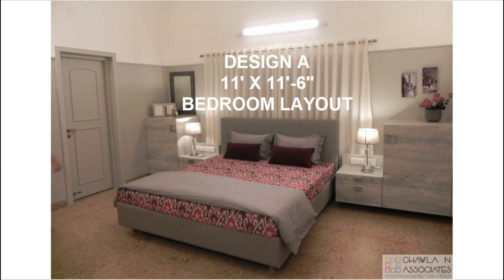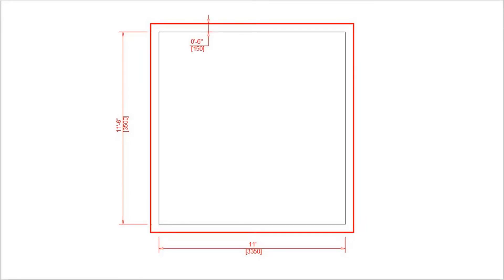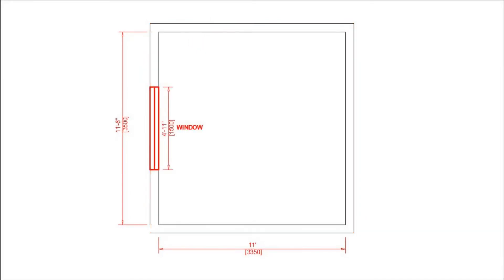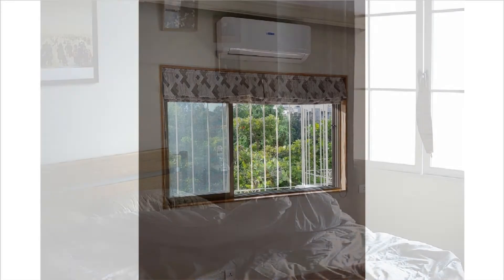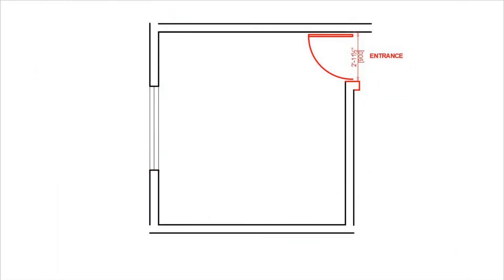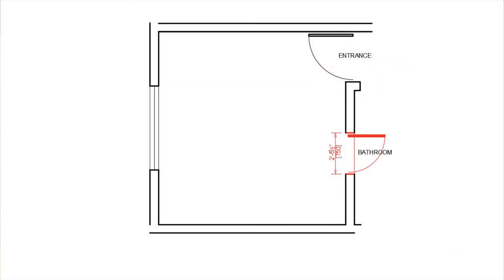Let us start by making a rectangle of 11 by 11 feet 6 inches. Let us offset it outside to show the thicker wall. Let us draw a window on the shorter wall of this bedroom, then draw the entry door to the bedroom. Let us assume there is an attached bathroom door to it.